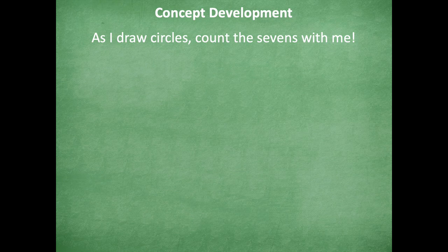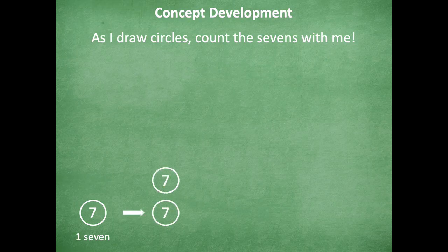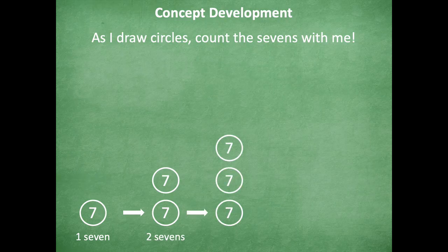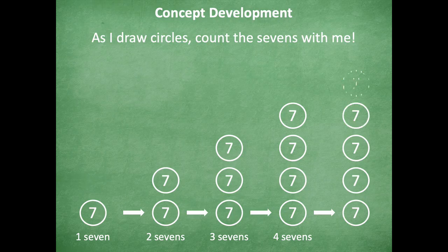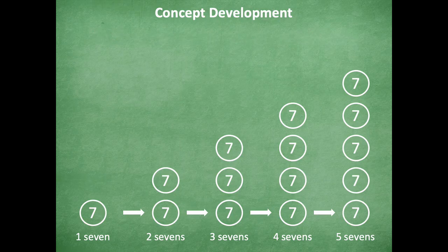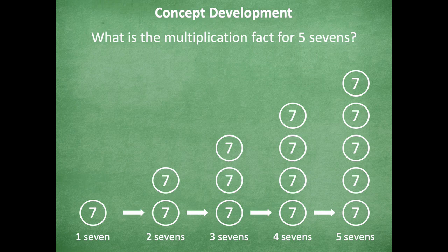Okay, so let's use what we talked about in that last problem to see how we can solve this one. As I draw circles, I want you to count the sevens with me. There's one seven, two sevens, three sevens, four sevens, five sevens. So this is one way you can model it. What's a multiplication fact for five sevens? It's just five times seven.